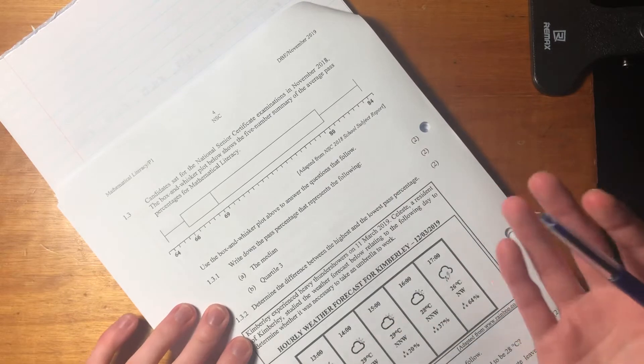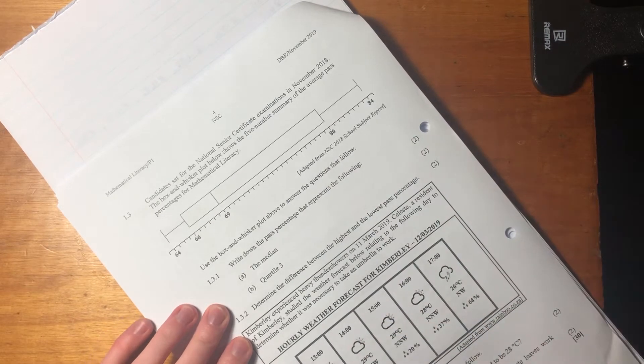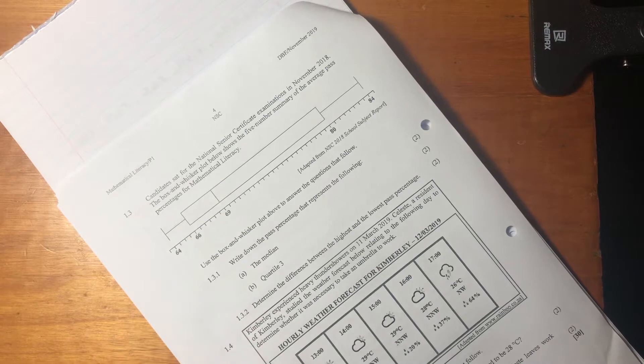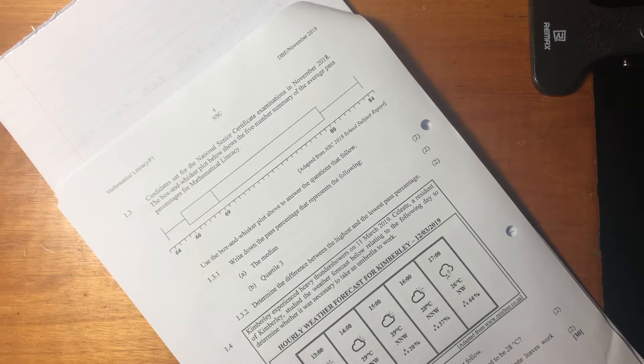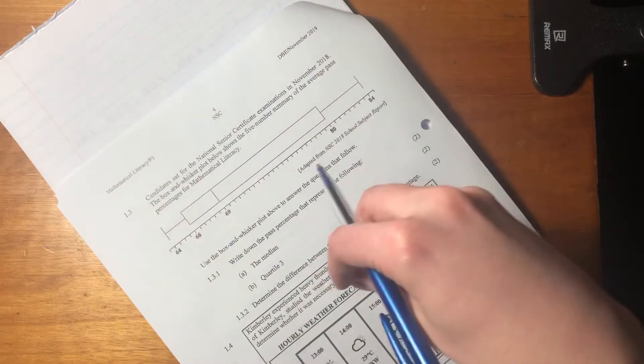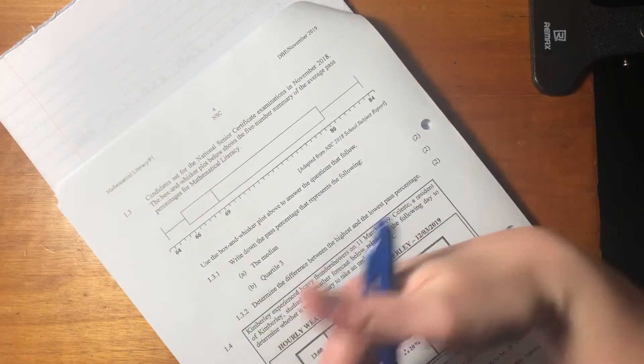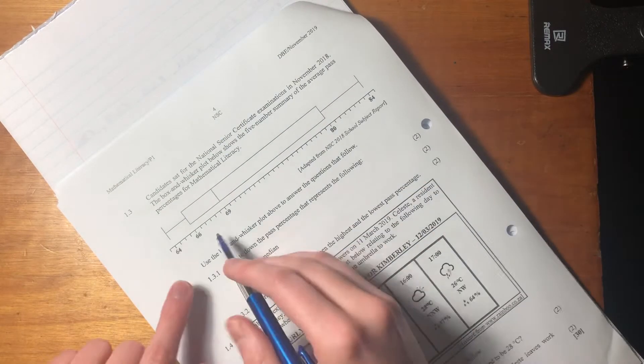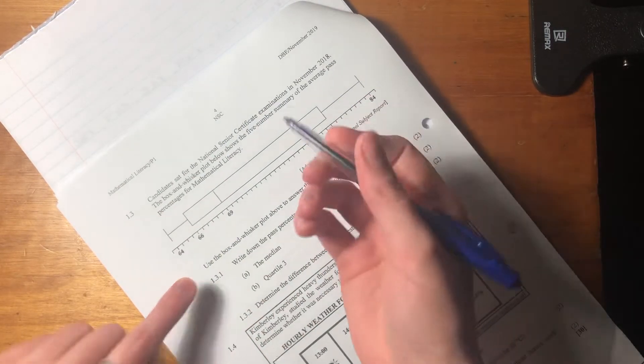Because a box and whisker is actually just a visual representation of some summary statistics. Statistics, it's a bit of a tongue twister. Basically, what we want from statistics is it gives us insight into data. And this is giving us insight into the average pass percentage for mathlet in November 2018. So let's see what each of these funky little numbers mean.